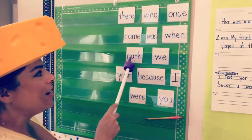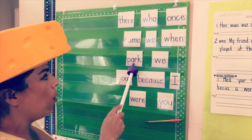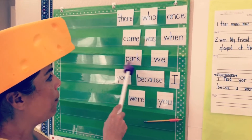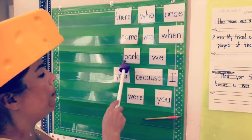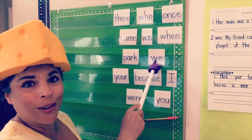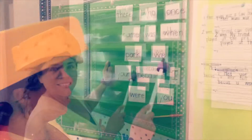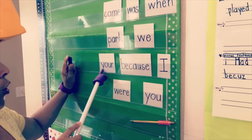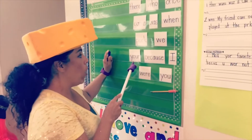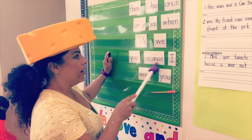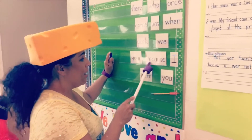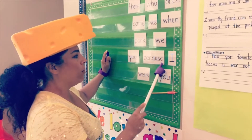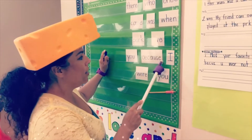This next one isn't a high-frequency word, but we see it in a lot of weekend news, so we want to make sure you spell it right. Spell it with me: p-a-r-k, park. Next word — that's right, it's w-e, we. y-o-u-r, your. And everyone's favorite: b-e-c-a-u-s-e, because. One more time — b-e-c-a-u-s-e, because.